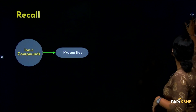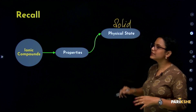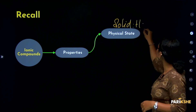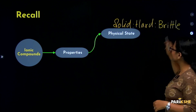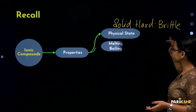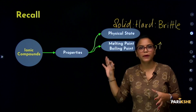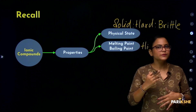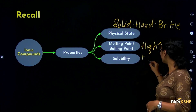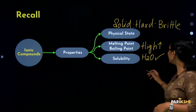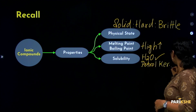To summarize all the properties: First property — physical state. All ionic compounds are generally solid in state, hard in nature, and brittle. Second — melting and boiling point. Due to the electrostatic forces of attraction, the melting and boiling points of ionic compounds are pretty high. Third — solubility. Ionic compounds are soluble in water, but not soluble in petrol or kerosene.